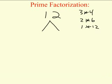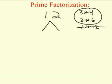Of these choices, I want to either go with 3 times 4 or 2 times 6. I don't want to go with 1 times 12 because 1 is neither prime nor composite. So in prime factorization, we never use 1 as one of the factor pairs.